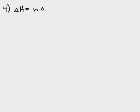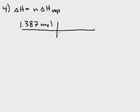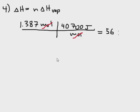In step four we calculate how much energy is required to convert all the liquid water into steam. We use the number of moles, 1.387, multiplied by the delta H of vaporization, 40,700 joules per mole. Moles cancels, and we calculate that 56,450.9 joules is the amount of energy required to convert all that liquid water into water in the gas phase.